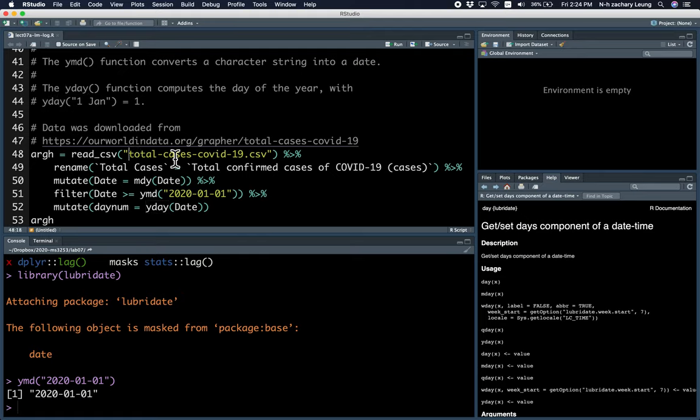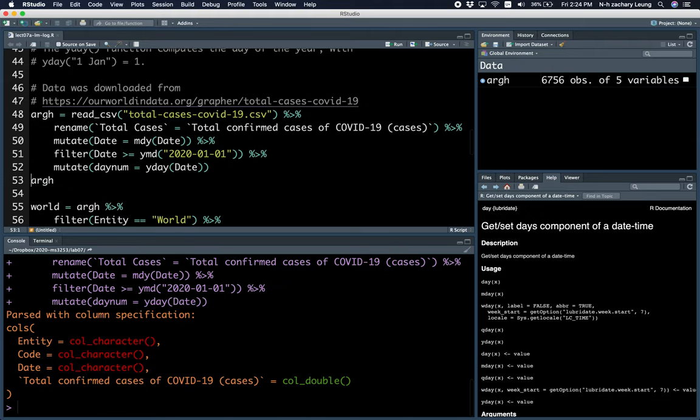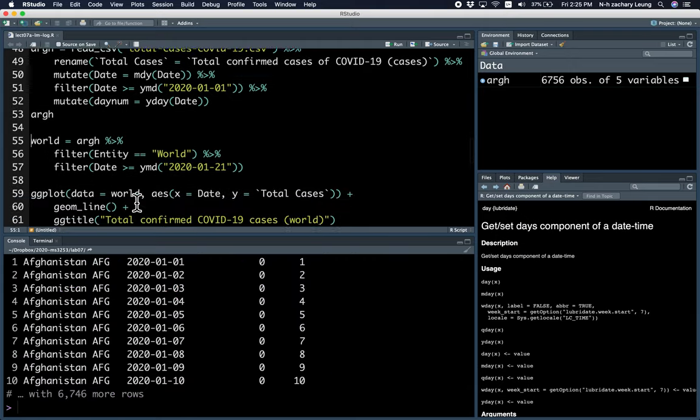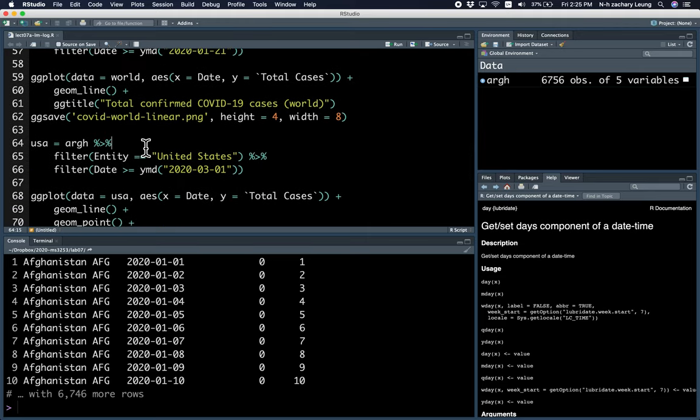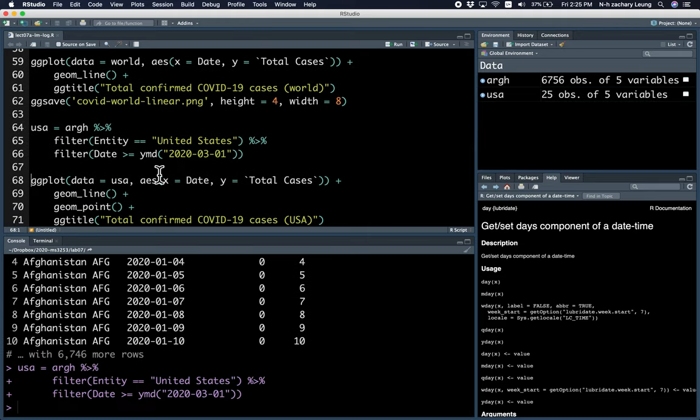So I downloaded some data from this website, which has been very helpful. And I call it arg, because obviously it's causing us lots of trouble. All right, so this is how I plot the world data, and that's fairly straightforward. This is the USA specific data.